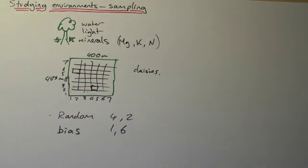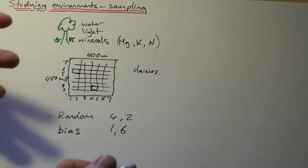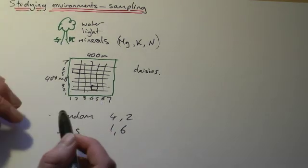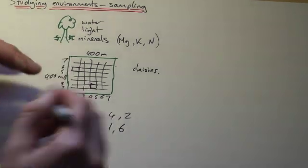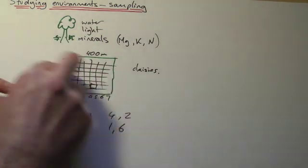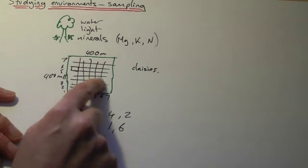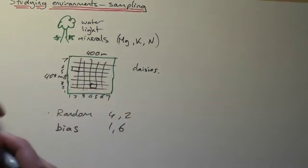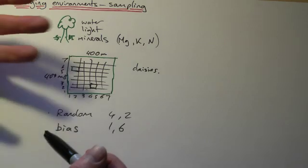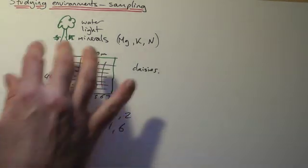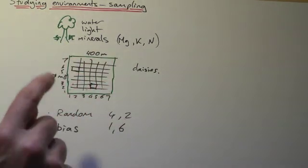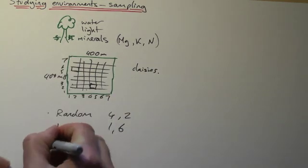And bias is a big problem in science. If you were asked to go out and count daisies in the field, the first thing you might do is go out there and look for daisies. But that's not telling you how they're distributed. That's just telling you that the daisies are there. So by making it random, you might find there's a square on here with absolutely no daisies in whatsoever. Well, fine, so be it. That's representative of the field as a whole. So it would be randomly done to remove bias.